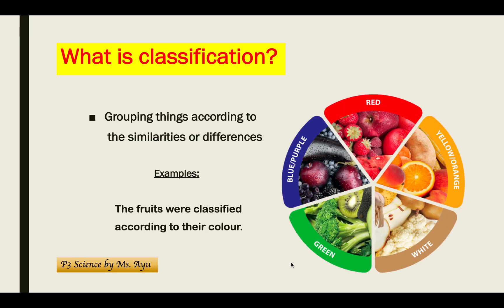The first thing we have to know and study here is: what is classification? Classification itself is grouping things according to their similarities or differences. For example, in this picture you can find various things — we have food, vegetables, fruits, and so on.